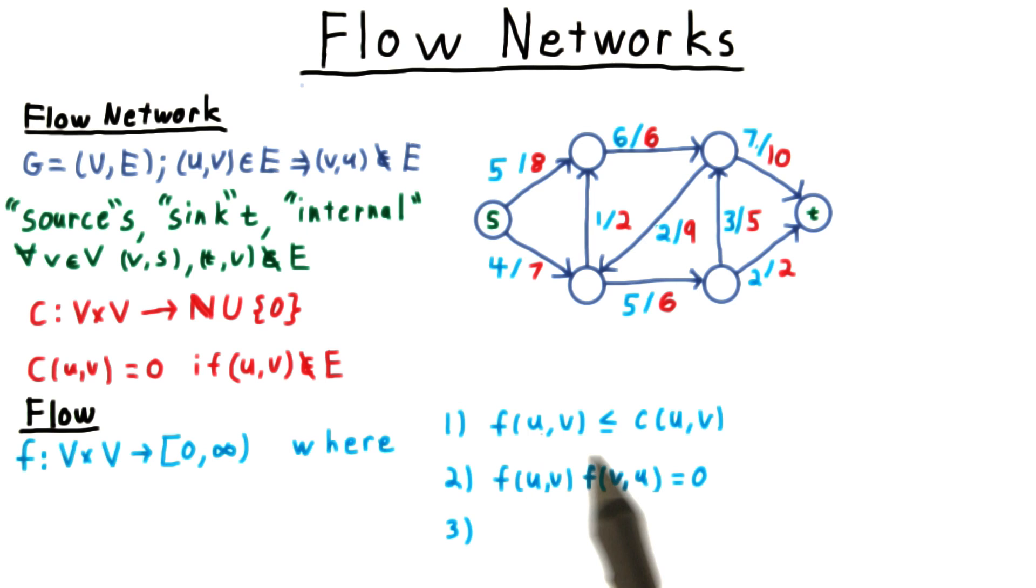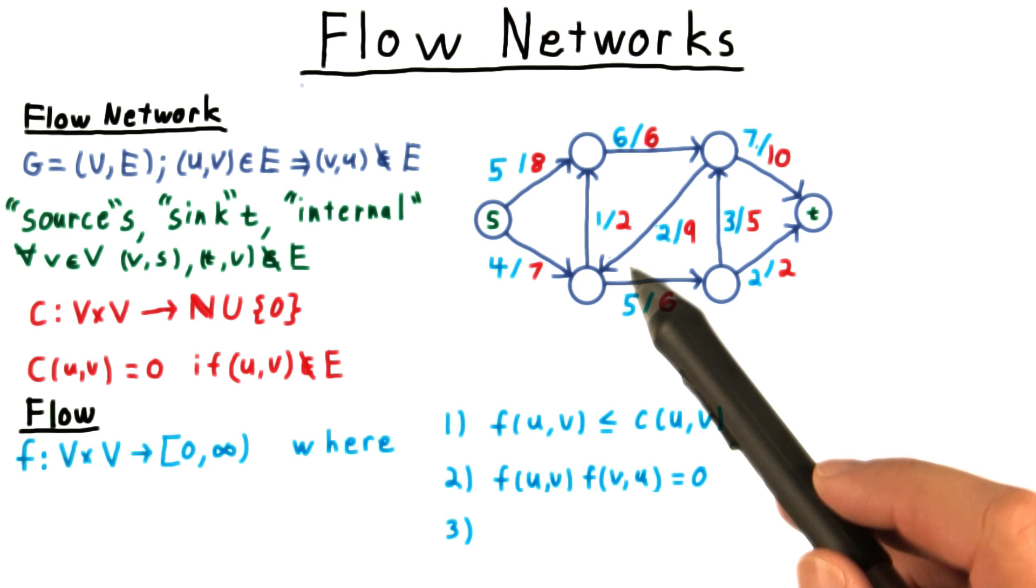Also, we require that between any two vertices, at least one direction be 0. It doesn't make sense to have flow going from one vertex to another, only to send it back again.